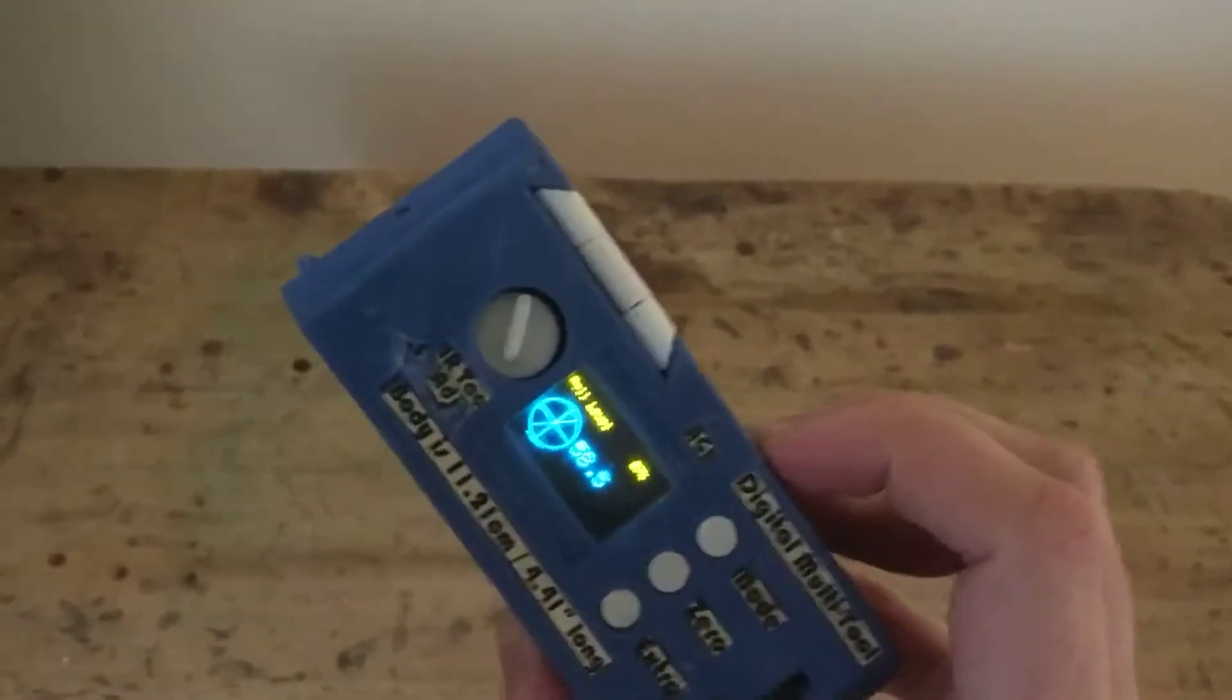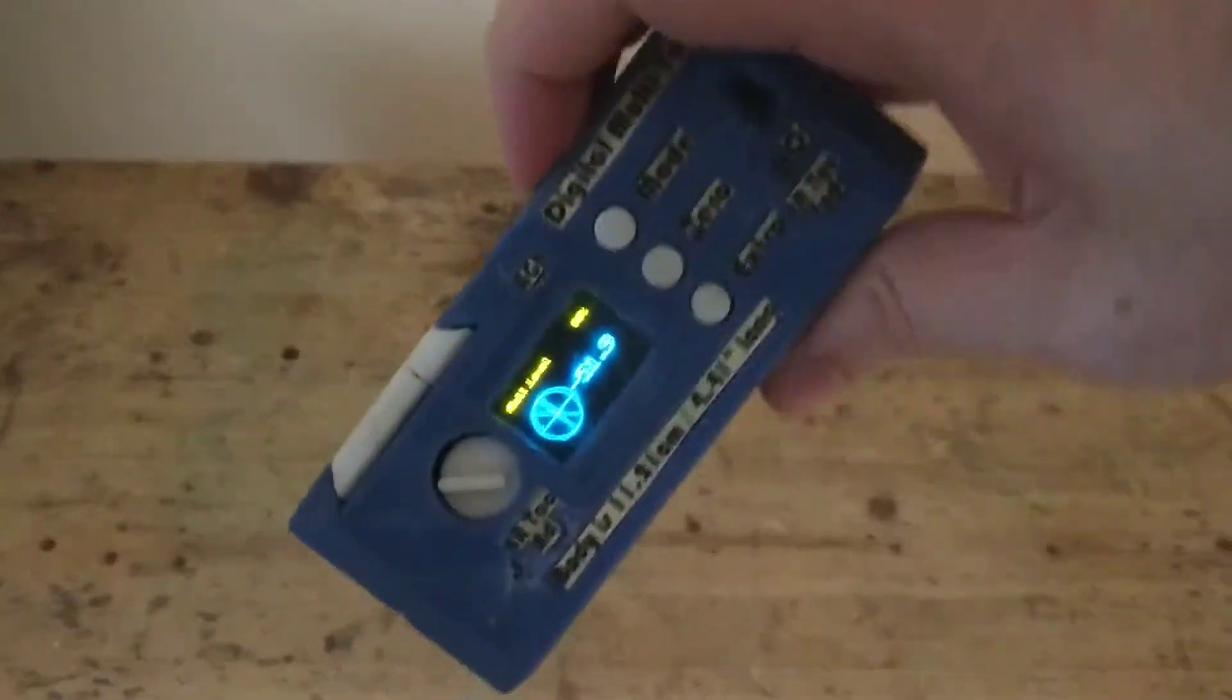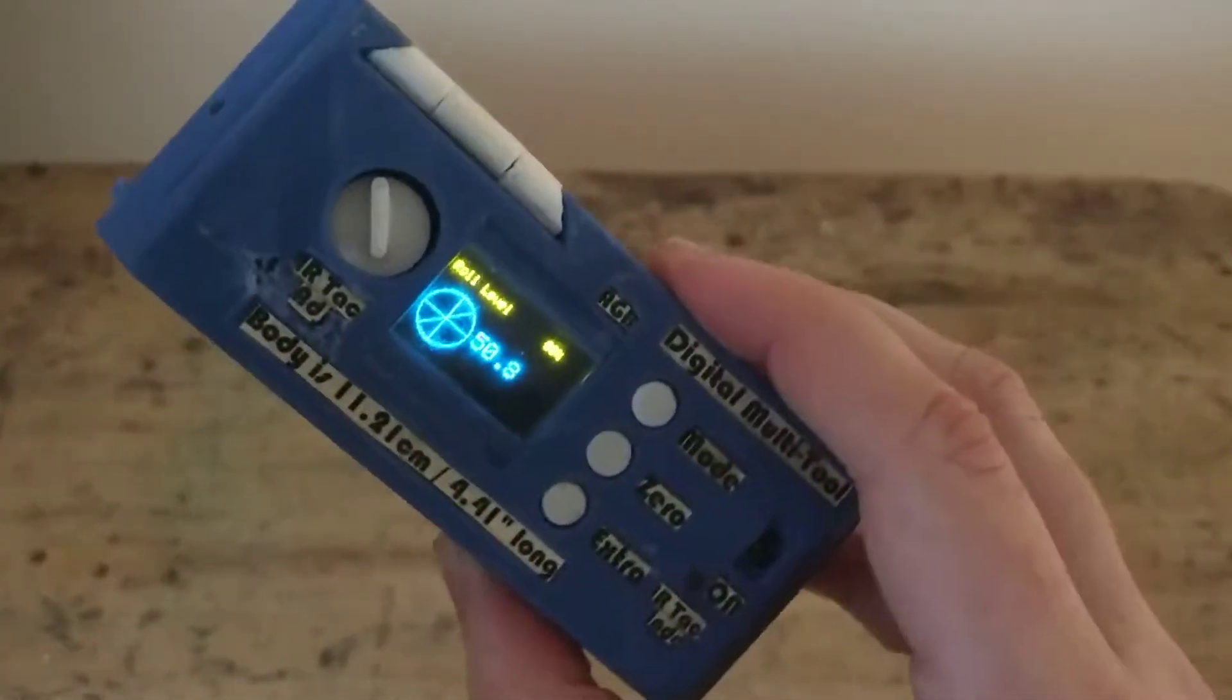So first you have a typical bubble level, so you can see as I roll the multi-tool it gives you the angle of tilt.